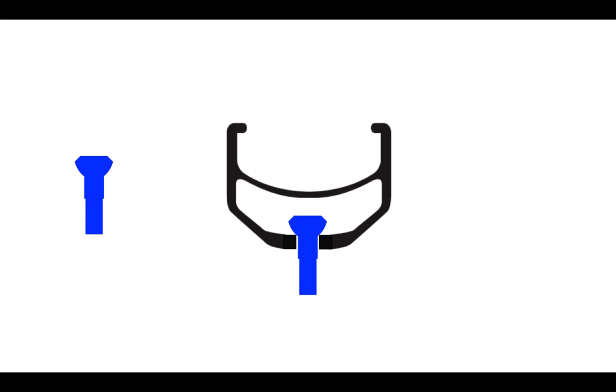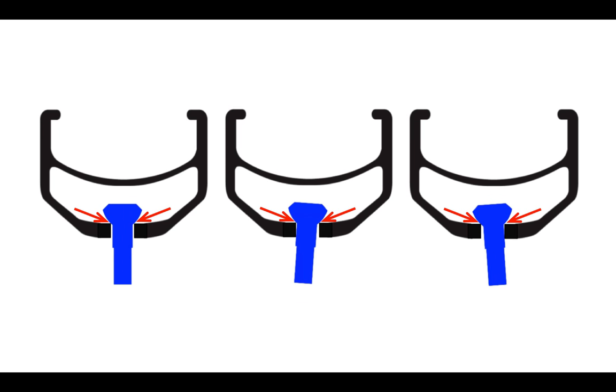This is my graphic of a Sapim polyaxial nipple, and we see it sitting nicely going through a hole of a rim. If the nipple has to angle itself or articulate slightly to the left it can do that and still make good contact with the hole. Similarly, the nipple can articulate this way. In all three of these cases, notice that the nipple is still making contact with all 360 degrees of the hole in the rim.